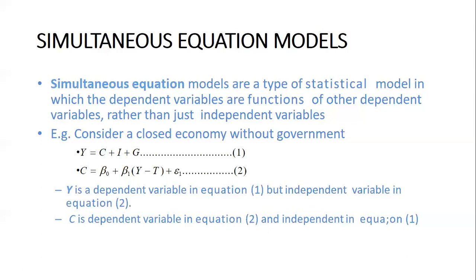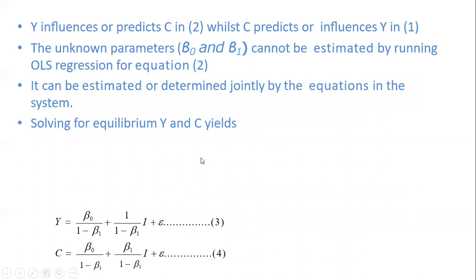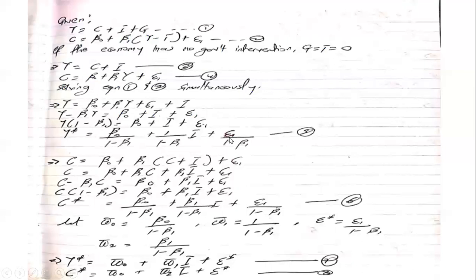When we have a scenario where the dependent variable tends to predict each other in a given set of equations, we cannot estimate the regression coefficient. We have to get a set of equations where the dependent variables don't predict each other. We can do that by solving the two equations simultaneously to get a new system of equations. Let's run through the solution. These two equations are the ones we saw in our previous slides — the closed economy and the consumption function.